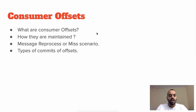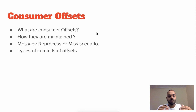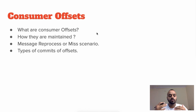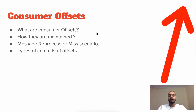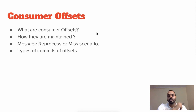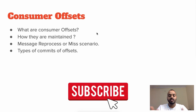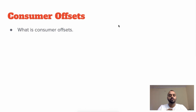Hey guys, welcome to Tech with Aman. In this video we'll look at what are consumer offsets and how these consumer offsets are maintained. There can be scenarios where messages are being reprocessed or missed due to wrong handling of these consumer offsets. We will also discuss those scenarios and the types of commits for offsets. I have created more videos regarding Kafka — you can check those via the i-button, and if you like the channel please consider subscribing.